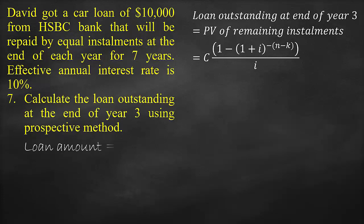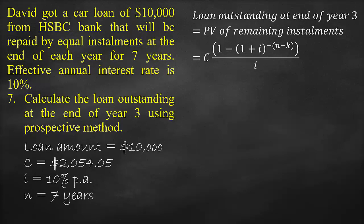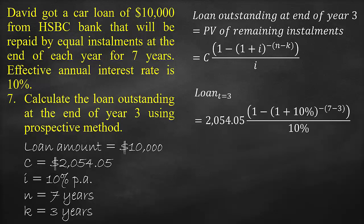We have a periodic installment of $2,054.05, an effective annual interest rate of 10%, a total number of periods of 7 years, and the number of paid installments is 3 years. So the loan outstanding at the end of year 3 equals $2,054.05 multiplied by [1 minus (1 + 10%) to the power of negative (7 minus 3)], all divided by 10%, which gives us $6,511.08.